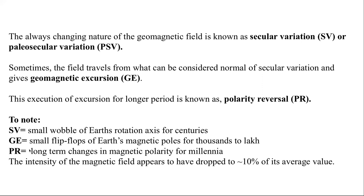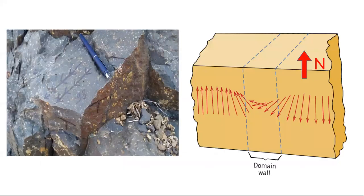To summarize: secular variation is a small wobble of Earth's rotation axis lasting hundreds of years. When a sudden flip-flop occurs and extends to thousands to hundreds of thousands of years, that is a geomagnetic excursion. Polarity reversal refers to long-term changes in magnetic polarity lasting millions of years. During this transition, the intensity of the magnetic field drops to around 10% of its average value.